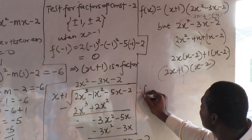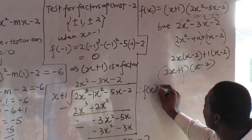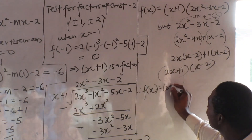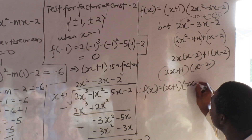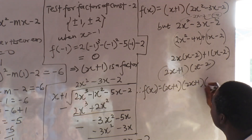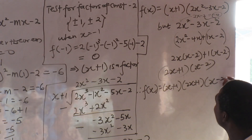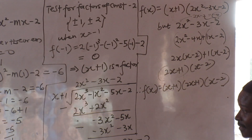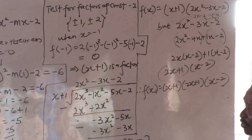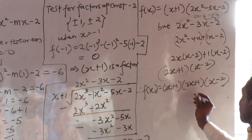So f(x) equals (x plus 1)(2x plus 1)(x minus 2). That is my f(x). So I have factorized f(x) completely.